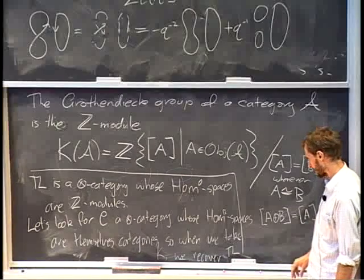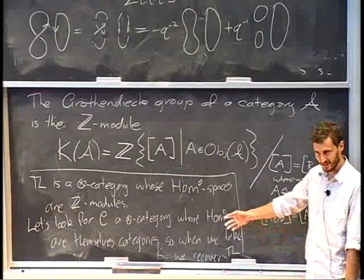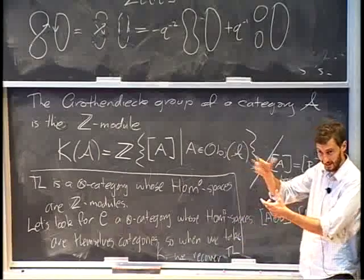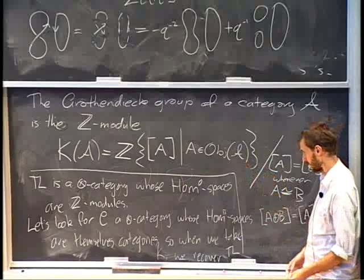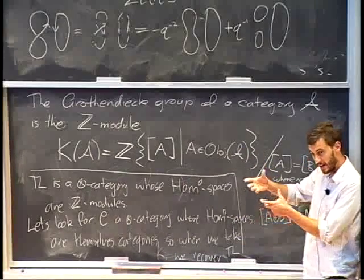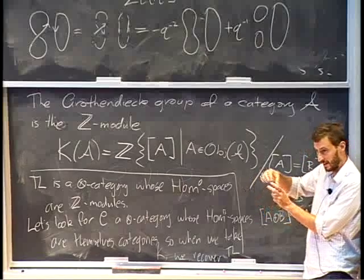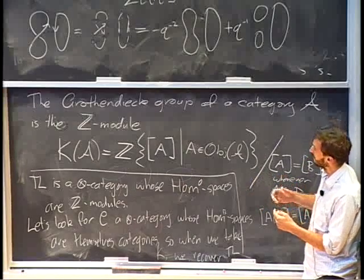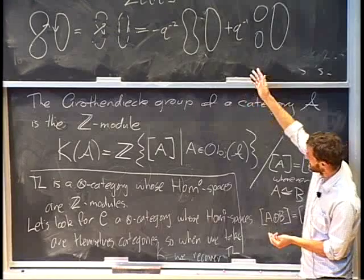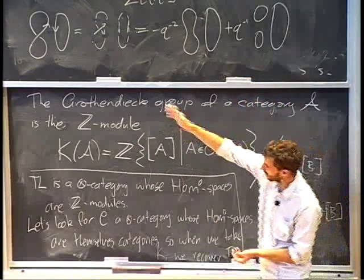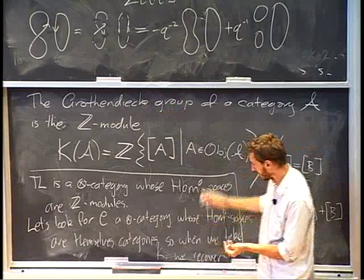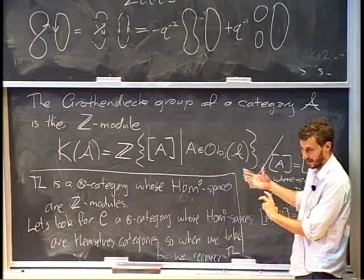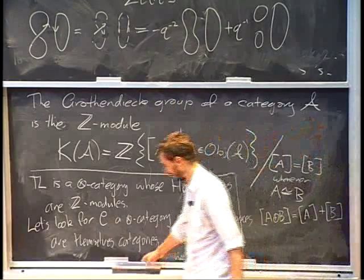Does this make sense — this idea of a tensor category whose Hom spaces are themselves categories, and we can take the Grothendieck group of each of those Hom spaces? In Temperley-Lieb, Hom from four to two was just some collection of diagrams; now Hom from four to two is going to be some little category and we want to take the Grothendieck group of that category.